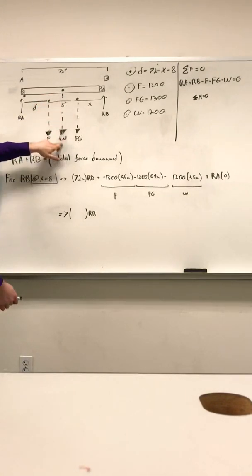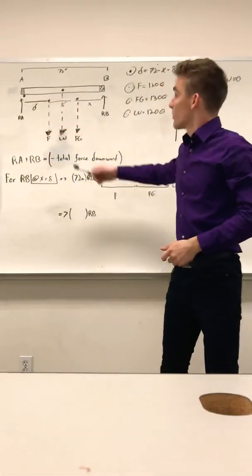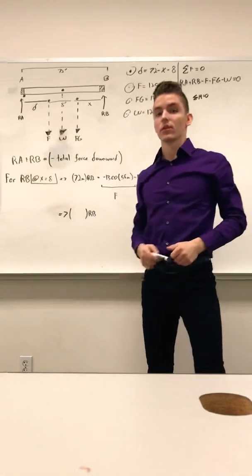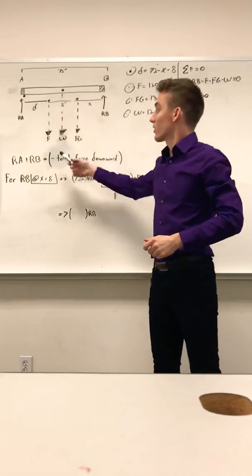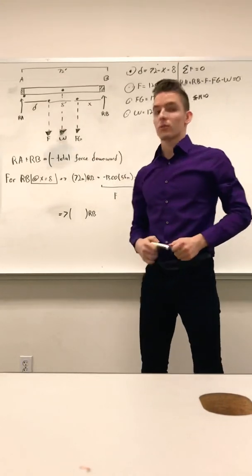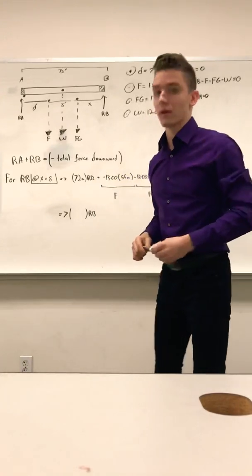Now keep in mind, this third force, this is the weight of your beam, will always be calculated by the length of the entire beam, which is 72 feet, divided by two. Keep in mind also that this is not going to change, the way you calculate weight, regardless of how X changes, because the center of mass of your beam will always be at the middle of the beam, which is length divided by two.